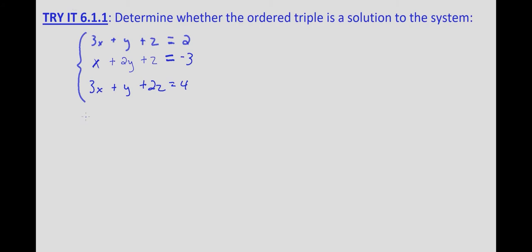This is simply a matter of taking our ordered triple — in this case, for part A: 1, negative 3, 2 — and we substitute these values for x, y, and z into each one of the equations to determine if they make true statements. If any of them makes an untrue statement, if they don't work in one of the equations, then we know the ordered triple is not a solution to the system. If it works in all three equations, then we know it is.